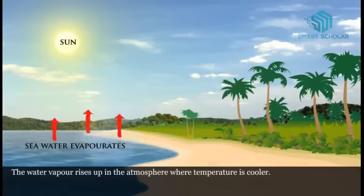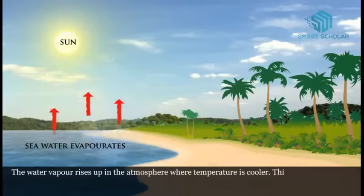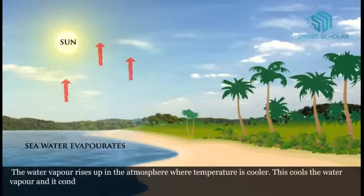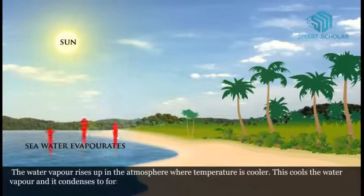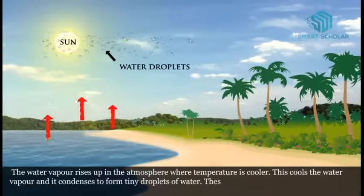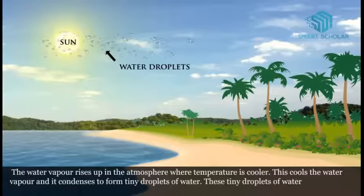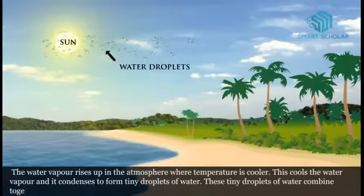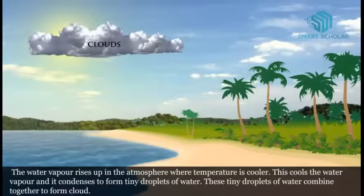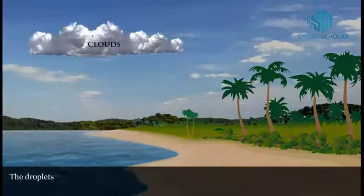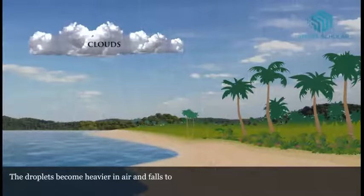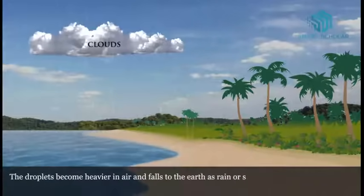The water vapor rises up in the atmosphere where the temperature is cooler. This cools the water vapor and it condenses to form tiny droplets of water. These tiny droplets of water combine together to form a cloud.